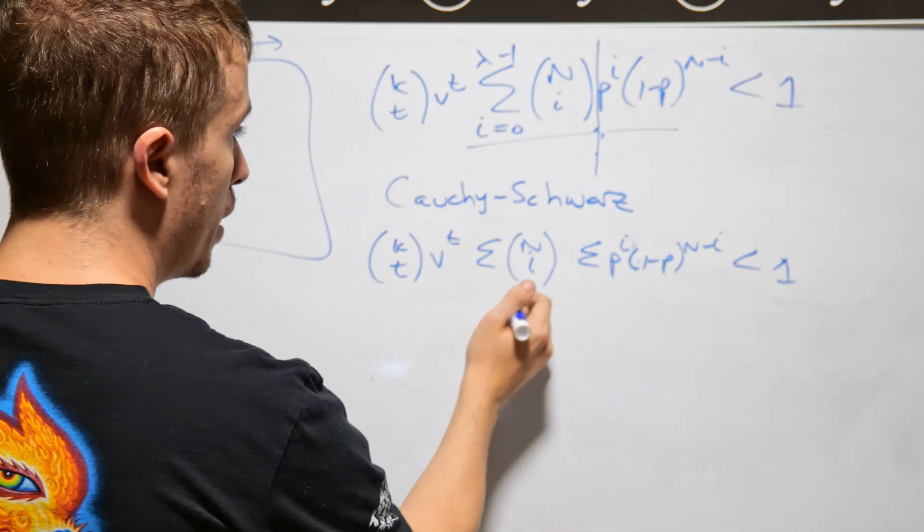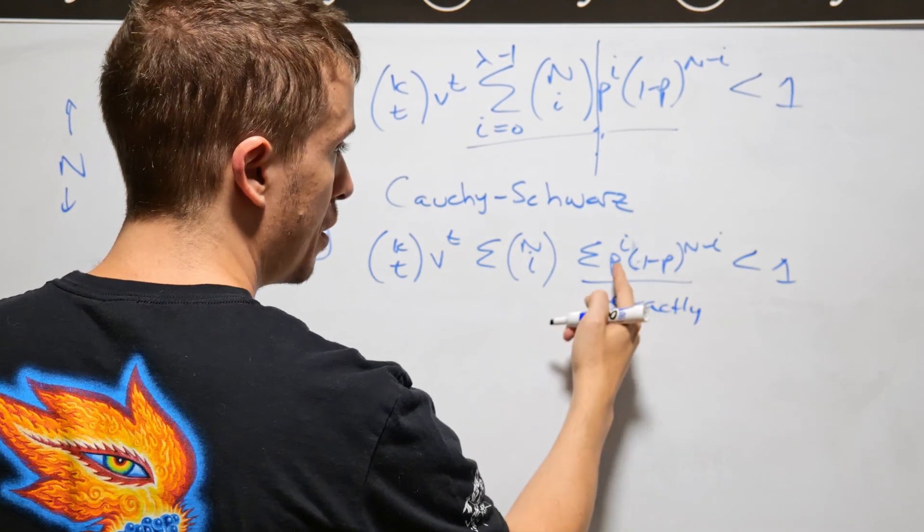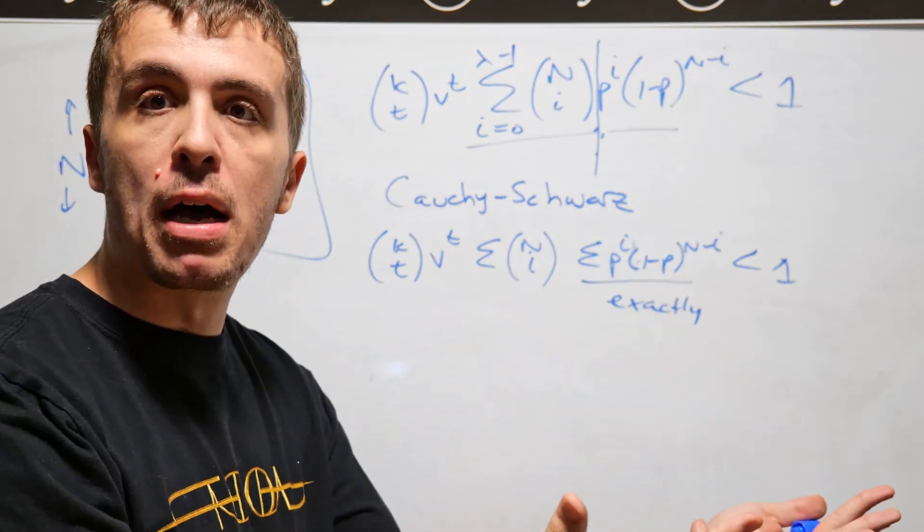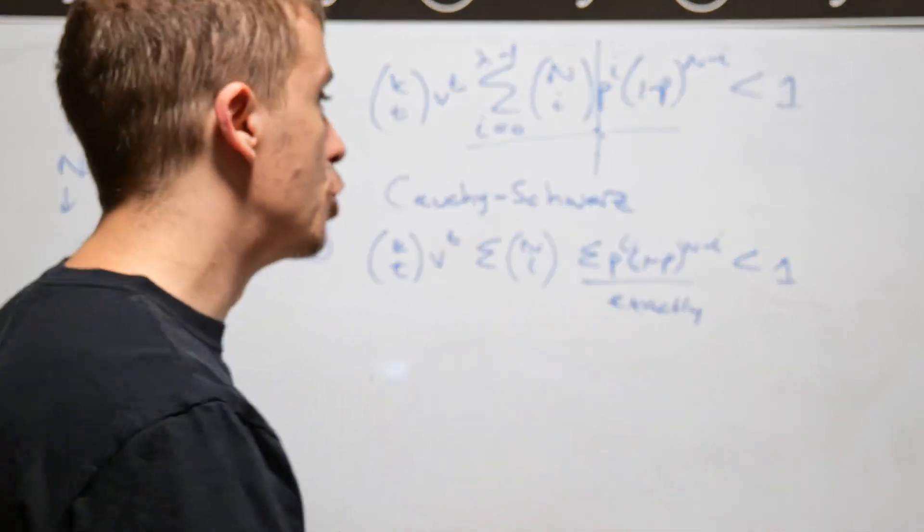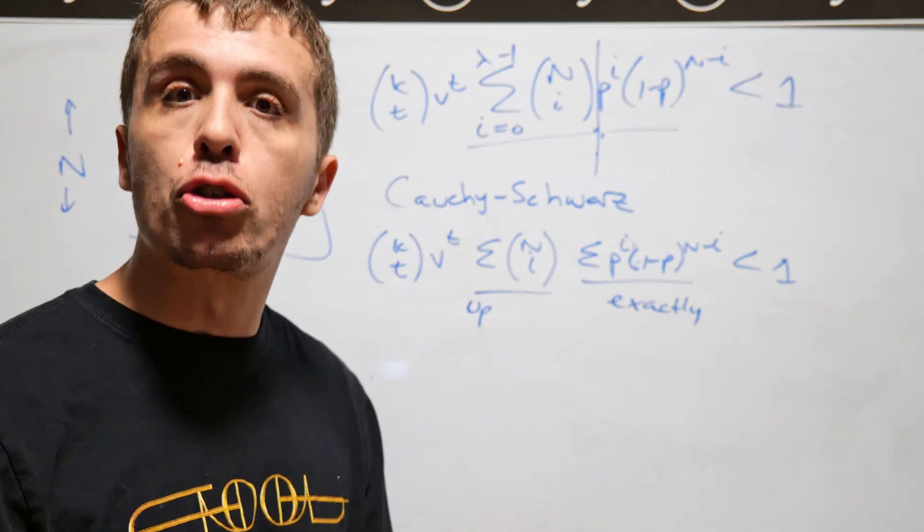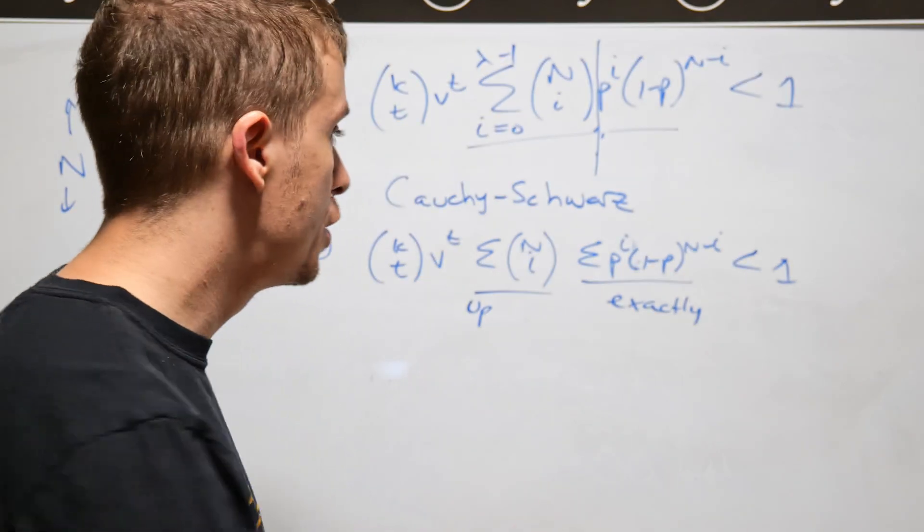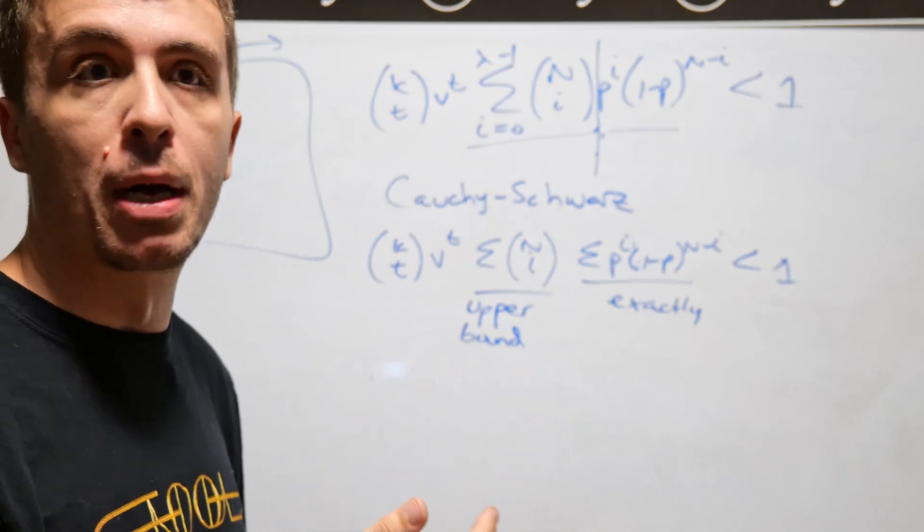So then what you do here is that you can solve this exactly. So the one that is just in terms of powers, you can plug into Wolfram Alpha and verify it obviously, but you can solve it exactly, which is really nice. And for this one, so we don't know a whole lot about partial sums of binomial coefficients, so what we do here is we apply an upper bound on this particular sum.